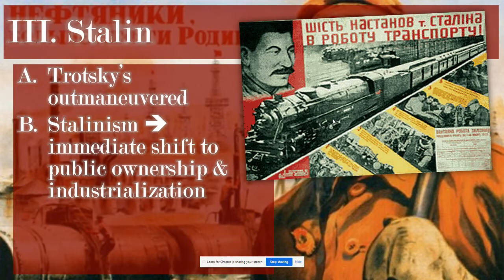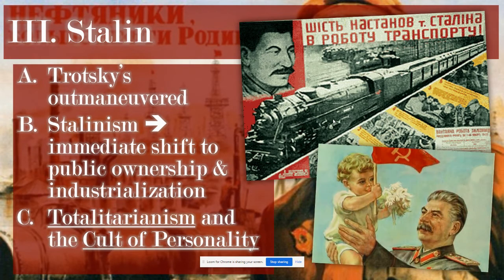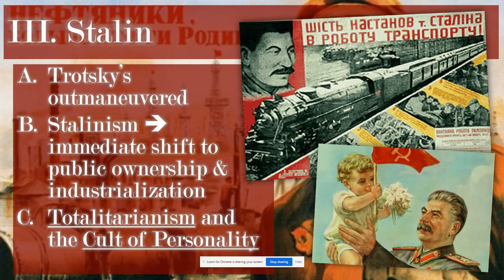What Stalin implemented was an immediate shift to public ownership and rapid industrialization — he would use as much of the country's instruments as possible to industrialize as fast as he could. The group that would suffer the most would be farmers and those in agriculture, whose resources would be seized and taken for the benefit of industrializing Russia. From there, supposedly, goods and resources would be redistributed across the country such that there would be no poverty.